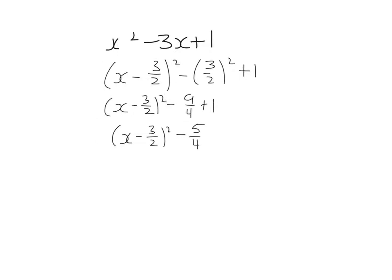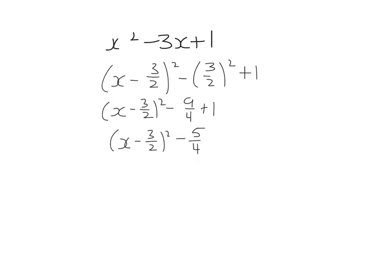We are then asked to solve the equation hence or otherwise. So what I'm going to do is set this equal to zero, so that's when x minus three over two all squared equals five over four.